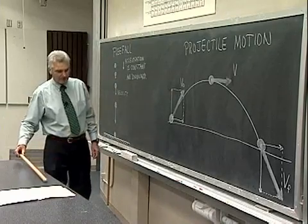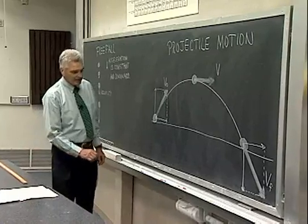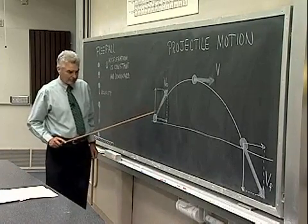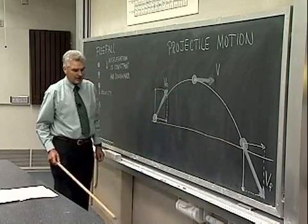With projectile motion, it's a type of free fall in which the particle travels through space. For example, here's the path of a projectile traveling across the room.